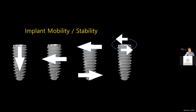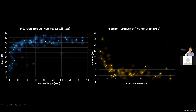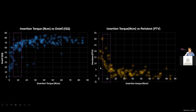The most important point is this: implant mobility — lateral movement and all types of mobility — can be measured by Anycheck and other machines, but torque itself cannot be measured by those devices. Keep in mind: a graph showing correlation between insertion torque and Osstell — if your Osstell value is 55, the insertion torque could be anywhere from 5 to 15 Ncm. Osstell will not tell you the torque value. Similarly, if your Perio Test value is 7, your insertion torque could range widely — high stability value doesn't necessarily mean high torque.